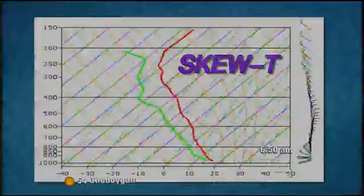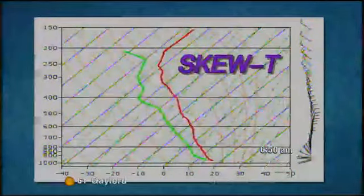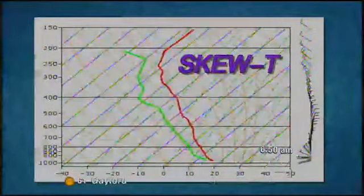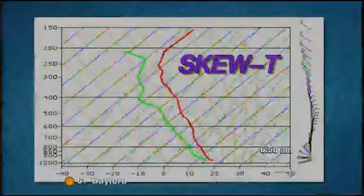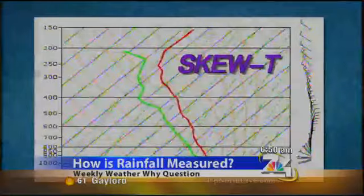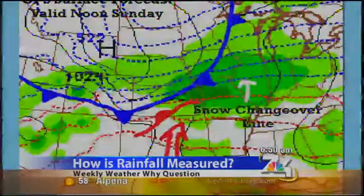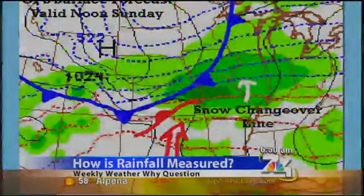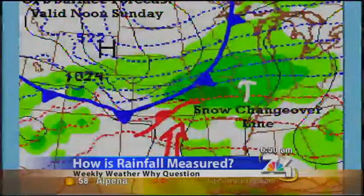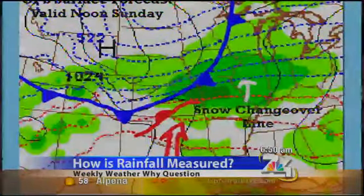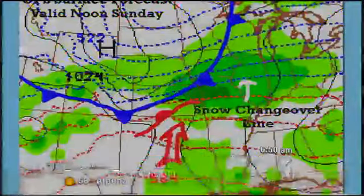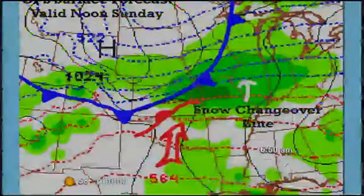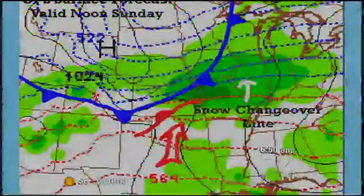Not only do we look at those pieces of information, we also look at what's called a skew-T chart. This is a vertical profile of the atmosphere. I won't get into exactly how you use it, but this gives an idea of what the instability is like in the atmosphere and also the temperature profile, which could make a big difference on whether you see rain or snow.